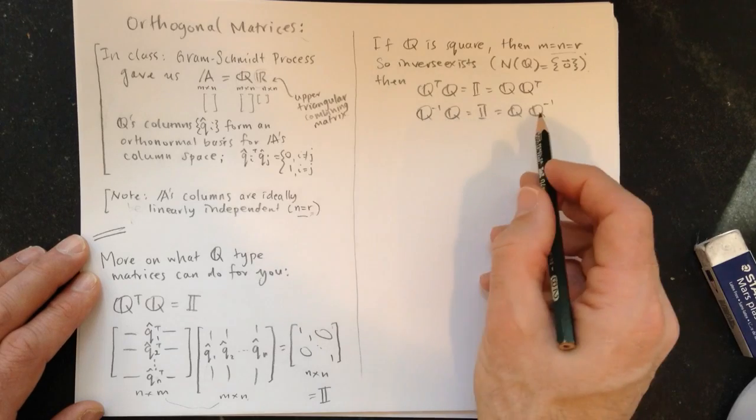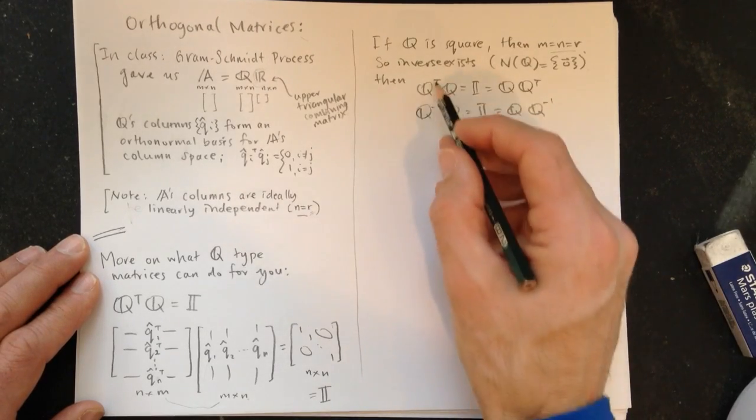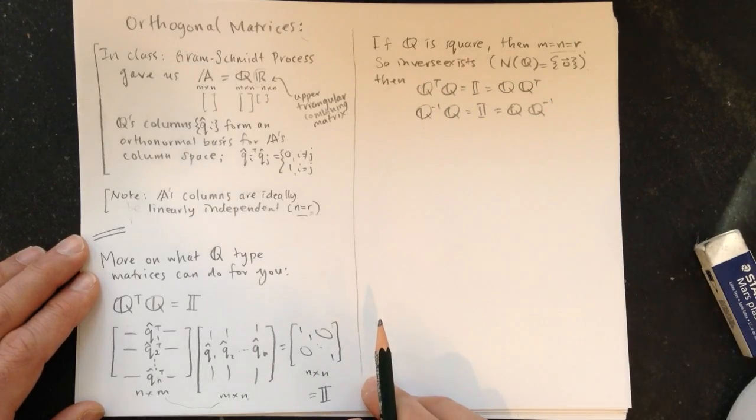So we figured out before that if we have a left inverse and a right inverse, we know that a matrix is invertible, they have to be the same, so therefore, this is true.